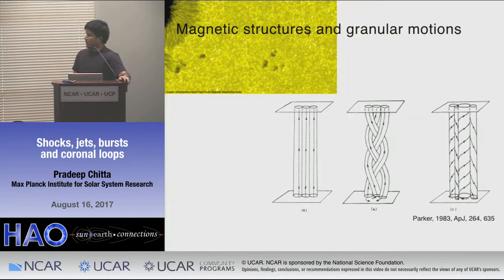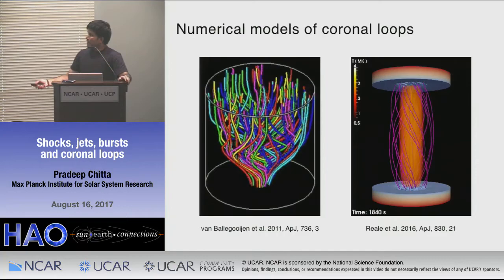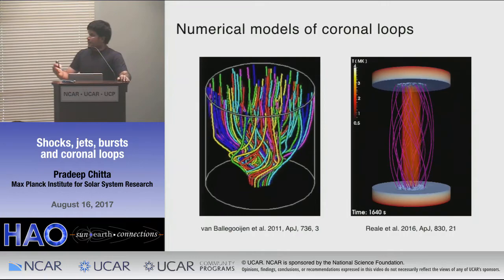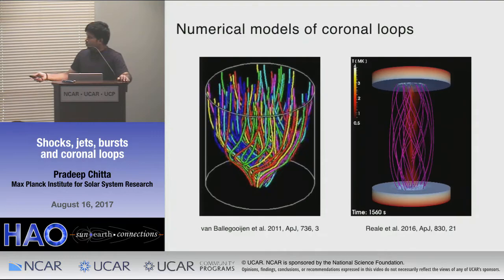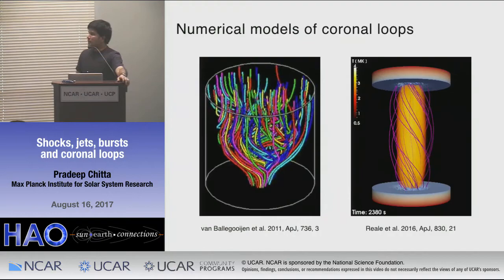Once the braiding structure is developed you have current sheets, and these current sheets start dissipating leading to heating of the solar corona. This profound idea of Parker has been central to many advanced coronal loop models. On the left I show an Alfvén wave turbulence model employing random foot point motions at the photosphere where Alfvén waves are generated in the corona and dissipated stochastically. On the right is another model where foot point motions generate braiding in the corona leading to current sheet formation and plasma heating. These foot point motions play an important role in most coronal heating theories.